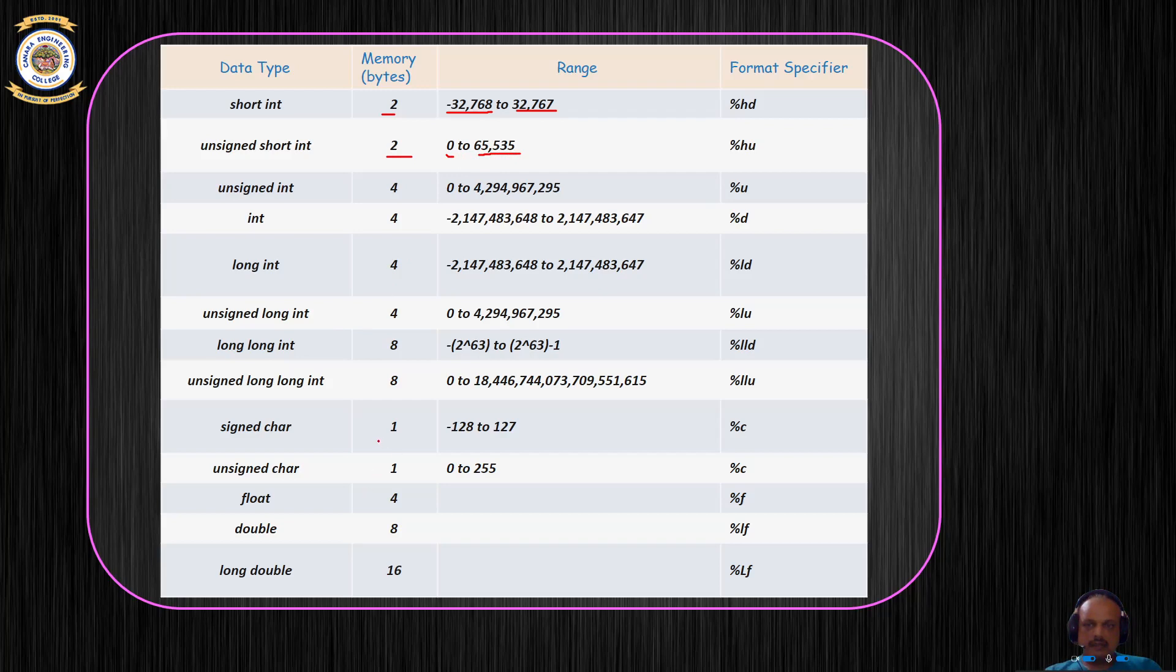A character takes one byte and can store a number from minus 128 to plus 127, whereas an unsigned character also takes a byte and can store information from 0 to 255. Similarly, float takes four, double takes eight, and a long double takes 16 bytes of data. So each data type has an associated number of bytes which gets allocated to store information.